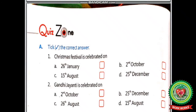Quiz Zone Part A — Pick the correct answer. First: Christmas Festival is celebrated on — Option A: 26th January, Option B: 2nd October, Option C: 15th August, Option D: 25th December. Second: Gandhi Jayanti is celebrated on — Option A: 2nd October, Option B: 25th December, Option C: 26th August, Option D: 15th August. Think and tick the correct answer in the given boxes.